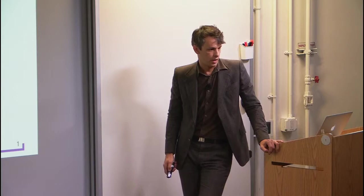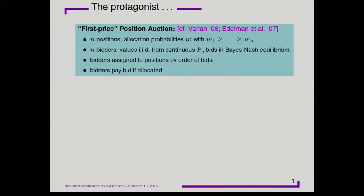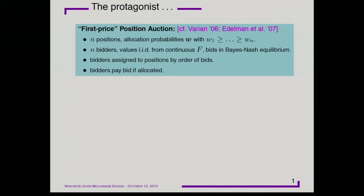The protagonist of this talk is a first-price position auction. You have n positions ordered in decreasing weight — the first position is the best, the last is the worst — with corresponding allocation probabilities. A bidder assigned to position i gets allocated with probability w_i. There are n bidders whose values are drawn iid from a continuous distribution F, and I'm studying what happens when bids are in Bayes-Nash equilibrium. Bidders are assigned positions by order of bids, and they pay their bid when allocated, so a bidder allocated to position i receives service with probability w_i and pays their bid with probability w_i.